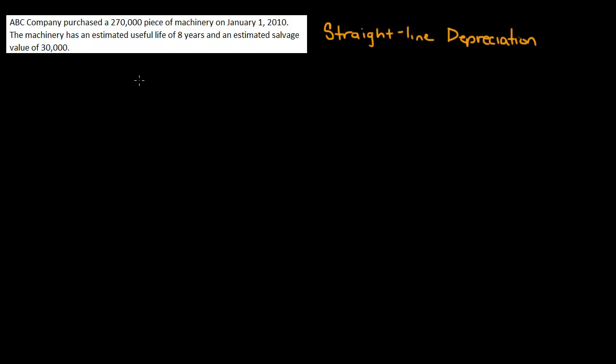So let's start with the journal entries. Whenever you do a journal entry, it doesn't matter what kind of depreciation you're doing, your entry is always going to be depreciation expense and accumulated depreciation. Depreciation expense is an expense account. Accumulated depreciation is a contra asset.